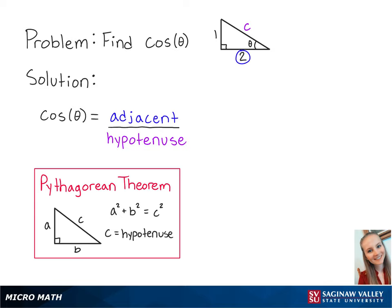Plugging in our values, we have 1 squared plus 2 squared equals C squared. If we simplify the left side, we have 5 equals C squared.